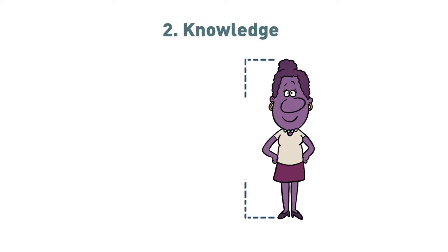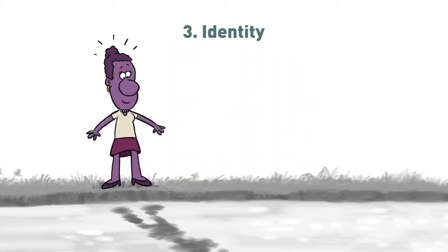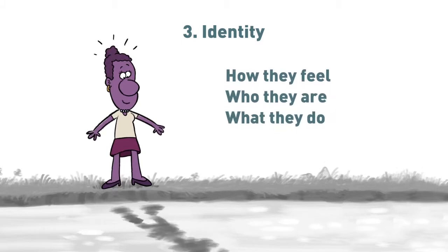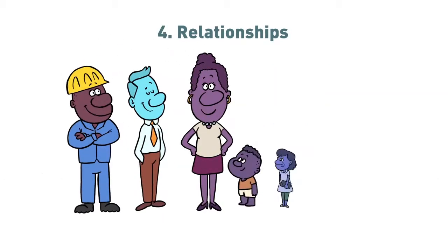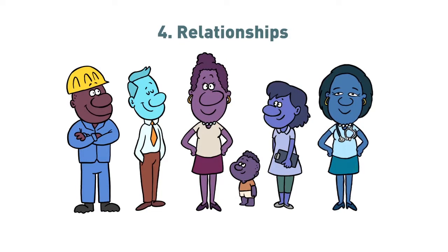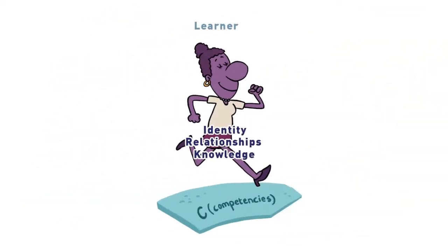Number two: their knowledge — the things they know about the world and what's around them. Number three: their sense of self and their identity — how they feel about themselves, who they are, and what they can do. Number four: their relationships — the personal relationships they have with other people and the social relationships that they are part of and that exist in society.